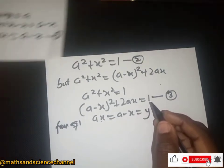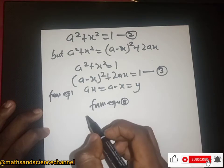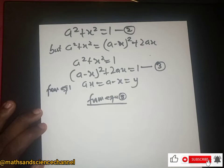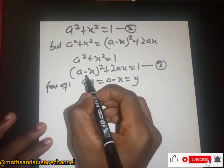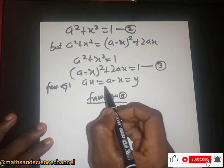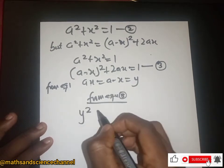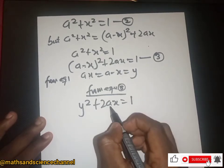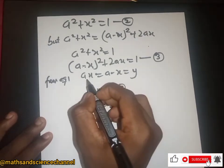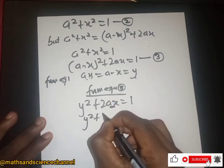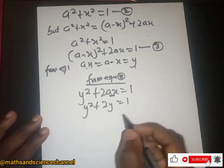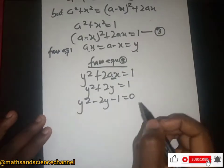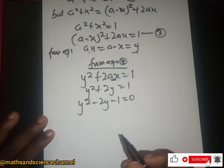From equation three, a minus x equals y, so we replace that: y squared plus 2ax being equal to one. Also, ax equals y, so we replace that as well. We now have y squared plus 2y equal to one — a quadratic equation.